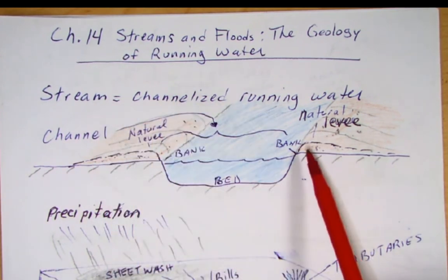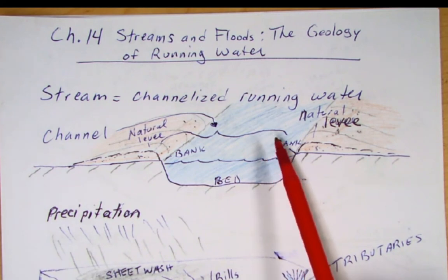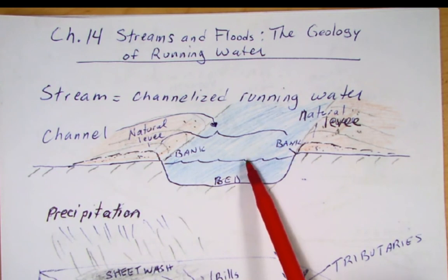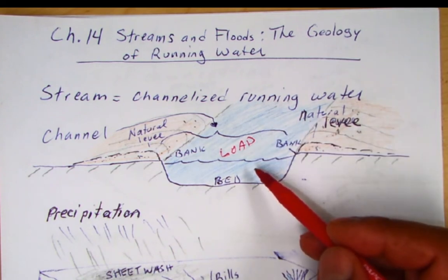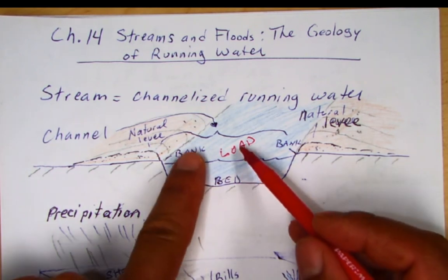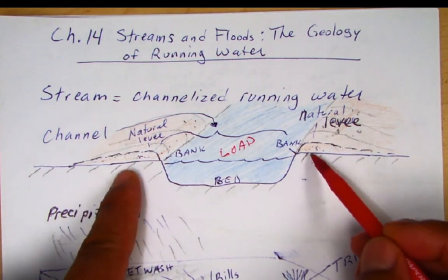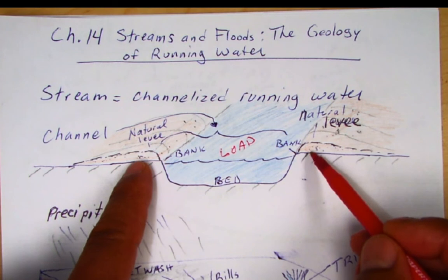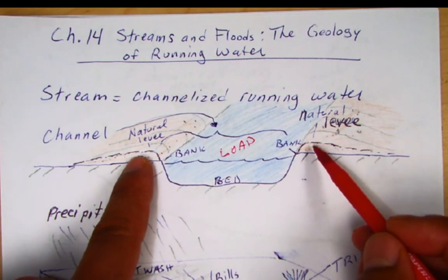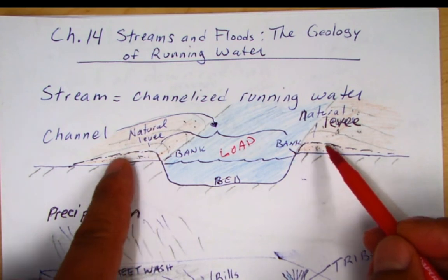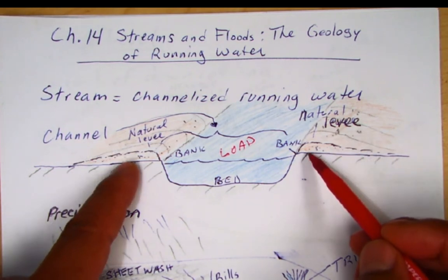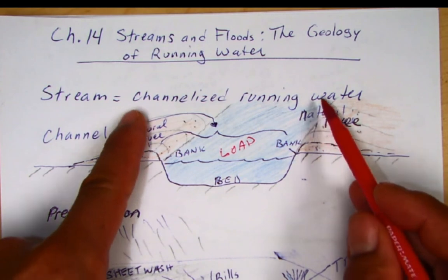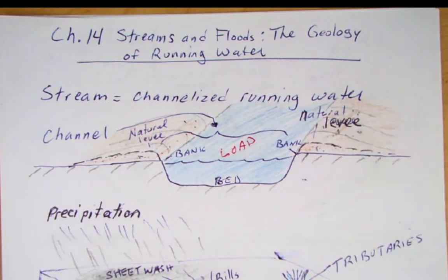When streams flood, the load — which is all the sediment, silt, sand, gravel, and dissolved material being carried by the river — gets deposited right along the banks. So the stream drops the load along the edges and makes these natural levees. Because we like to build homes on the flood plains or on these natural levees, we need to build man-made artificial levees to increase the height of these. We'll say more about these when we talk about floods.